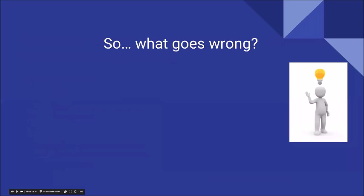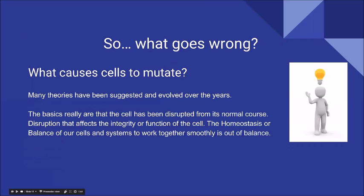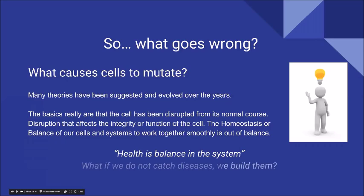So what goes wrong with that mechanism? What causes cells to mutate? Many theories have been suggested over the years. The basics are that the cell has been disrupted from its normal course — a disruption that affects the integrity or function of the cell. The homeostasis or balance of our cells and systems is simply out of balance. Health is balance in the system, which leads us to ask: do we not catch diseases but build them, or cause that imbalance ourselves?